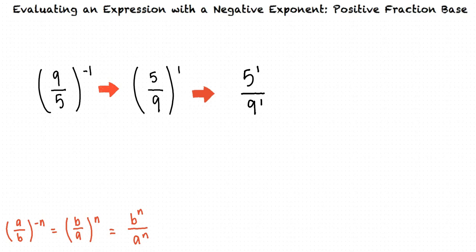5 raised to the first power is 5 and 9 to the first power is 9. This tells us that 9 fifths raised to the power of negative 1 can be rewritten as 5 ninths.